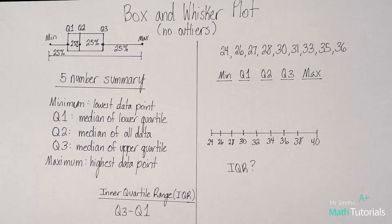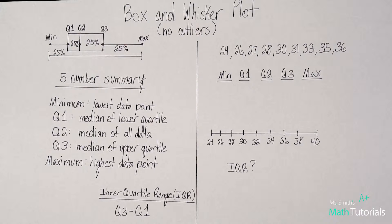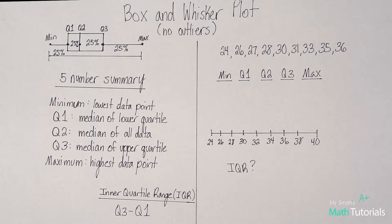A box and whisker plot, as I mentioned in the last video, is good for a whole big picture of data. It's not going to show you individual data points, but it's going to show you the spread of data and a big picture view.